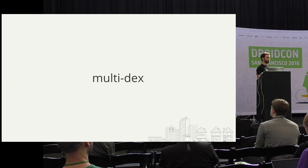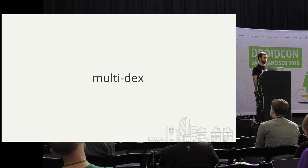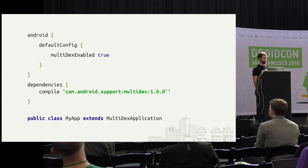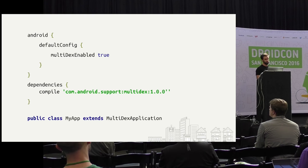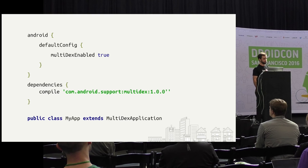So I still have this problem — how do we fix it? Spoilers: we ship multiple dex files. Google has an official solution for this. It's pretty cool and really easy to do. In your build.gradle, you set some flags, set some dependencies, and then make your application extend MultiDexApplication.